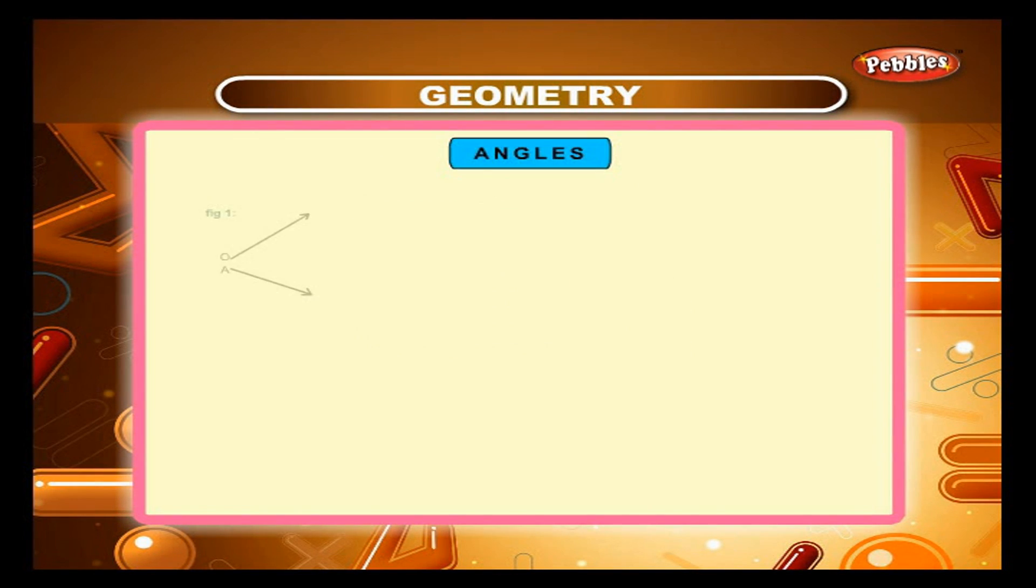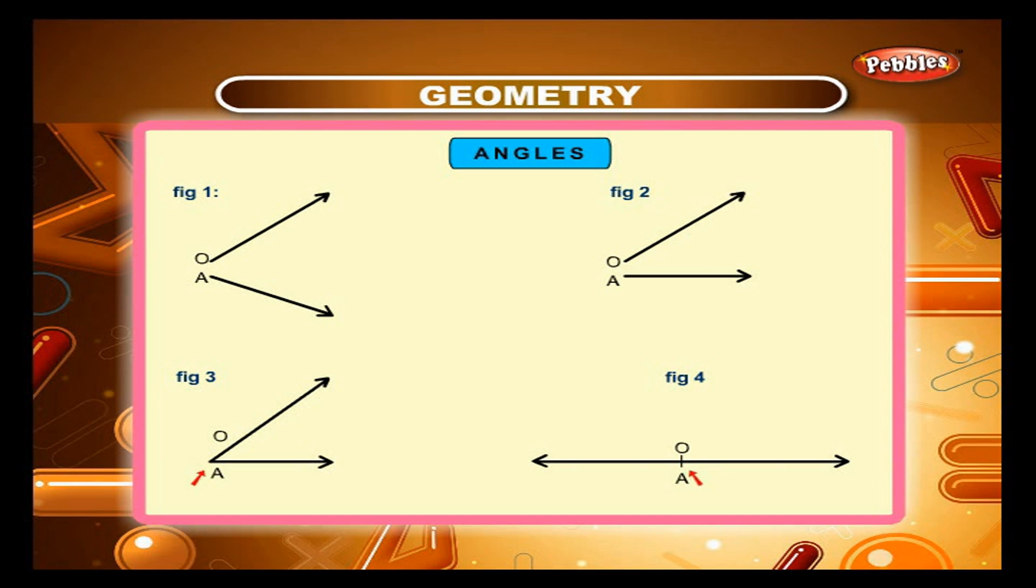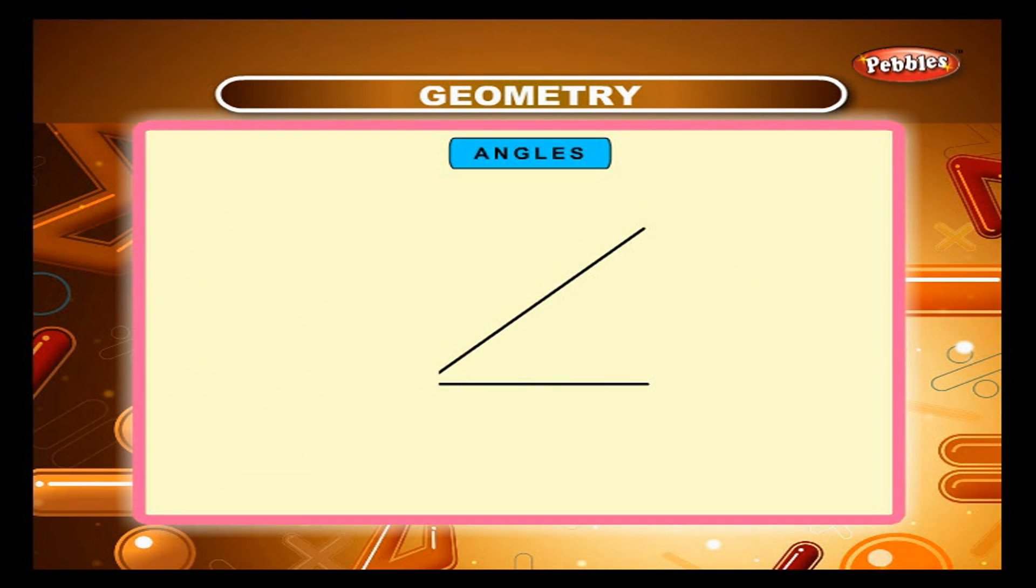Angles. Look at the figures. Figure 1, Figure 2, Figure 3, Figure 4. Each of the figures contain two rays. They have O and A as end points. In figure 3 and 4, the rays meet at the end points. What happens when two rays meet at a point?